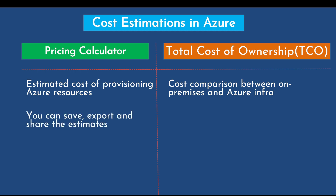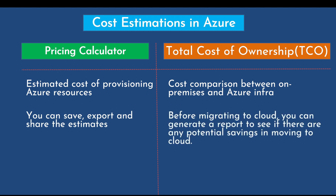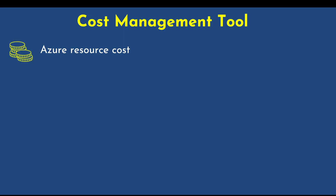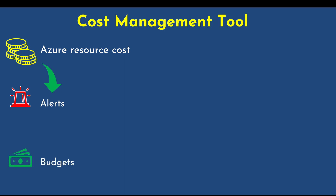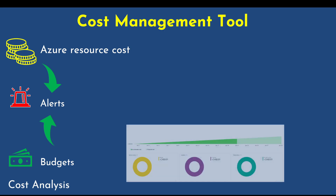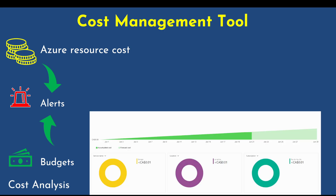You can save, export, and share estimates from the Pricing Calculator. Before migrating to the cloud, you can generate a report using the TCO to identify potential savings, and download and share that report as well. Azure Cost Management also provides the ability to quickly check Azure resource costs, create alerts based on resource spend, and set up budgets that trigger alerts when a budget threshold is breached. You can also review your spending by service, location, or subscription.